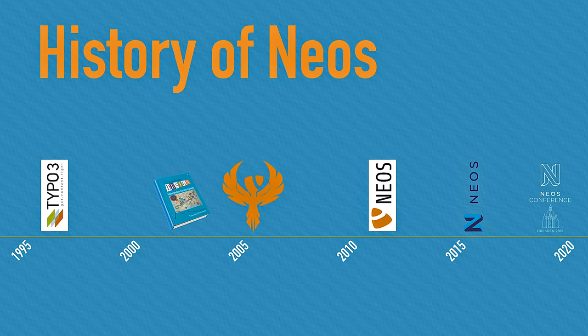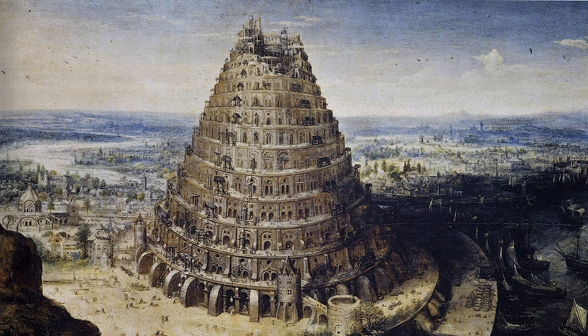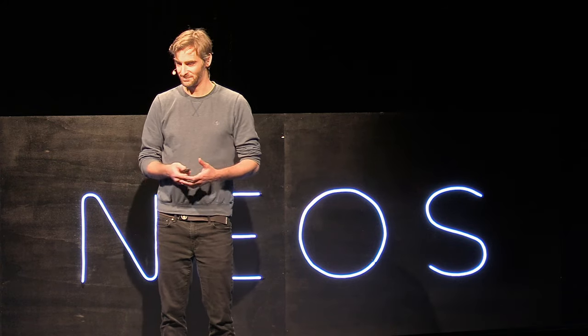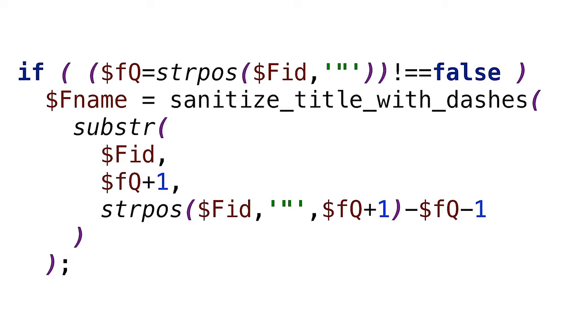In the very first presentations about Phoenix, Robert had a slide like this one. This is the Tower of Babel — that biblical story about a tower that should be so tall that humans could reach heaven, and then God prevented that by introducing languages so people couldn't communicate anymore. It was clear that language would play an important role in NEOS, and for that reason you won't find any code like this in the whole NEOS core today.